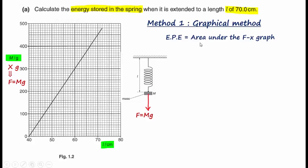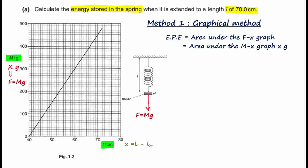Hence, elastic potential energy can be expressed as the area under the m versus x graph, multiplied by g. Now, L is the total length of the spring when mass m is hung. Extension x is the length L minus the unextended length L₀. The unextended length corresponds to when m equals zero; from the graph, when m equals zero, L equals 40 cm. So 40 cm is the original unextended length of the spring.